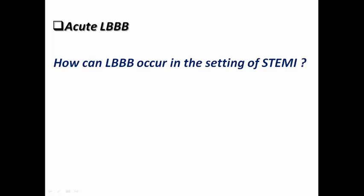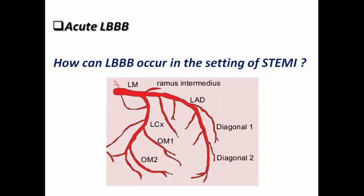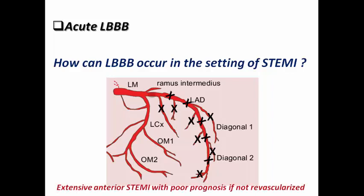How can left bundle branch block occur in the setting of STEMI? The left main coronary artery bifurcates into the LAD and LCX. The left bundle branch receives its blood supply from the septal perforators arising from the LAD. When there is proximal or near-ostial occlusion of the LAD proximal to the first septal perforator, the septal perforator doesn't receive enough blood supply, leading to acute left bundle branch block. That's why acute LBBB is included in ST-elevation myocardial infarction criteria — it indicates very proximal LAD occlusion and carries high-risk prognosis, showing extensive anterior STEMI with poor prognosis if not revascularized.